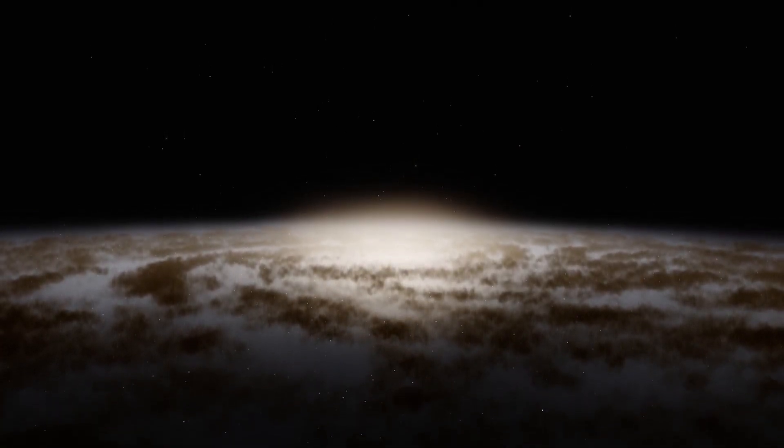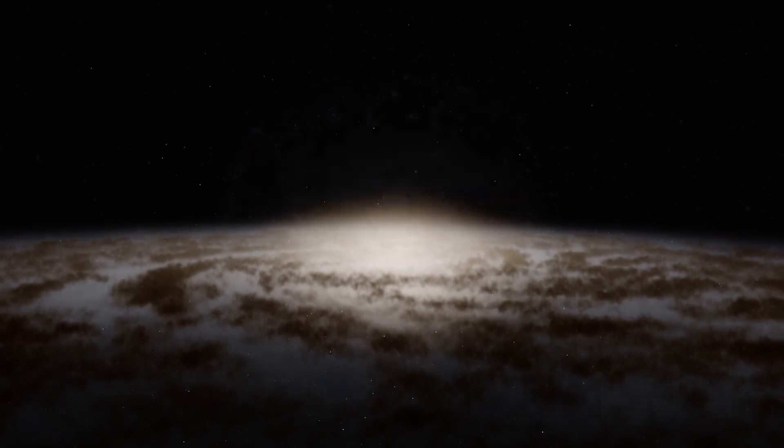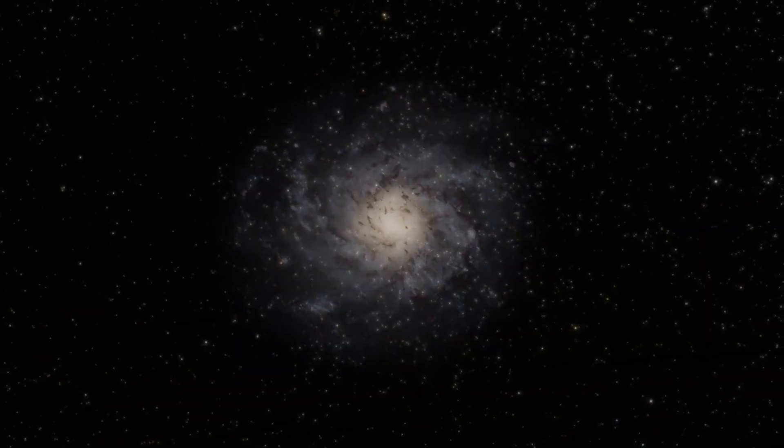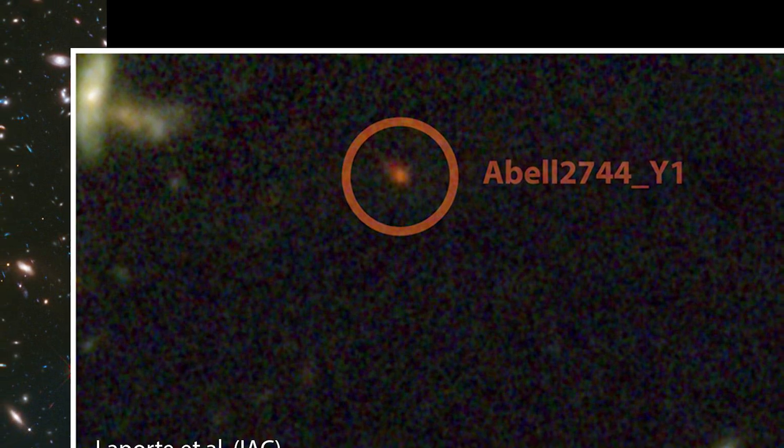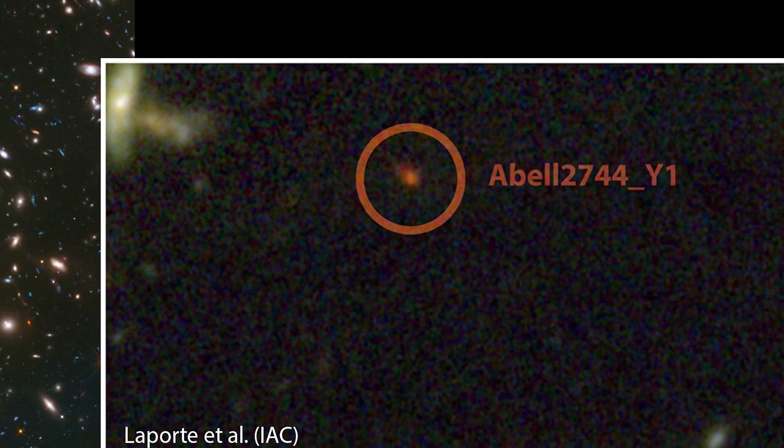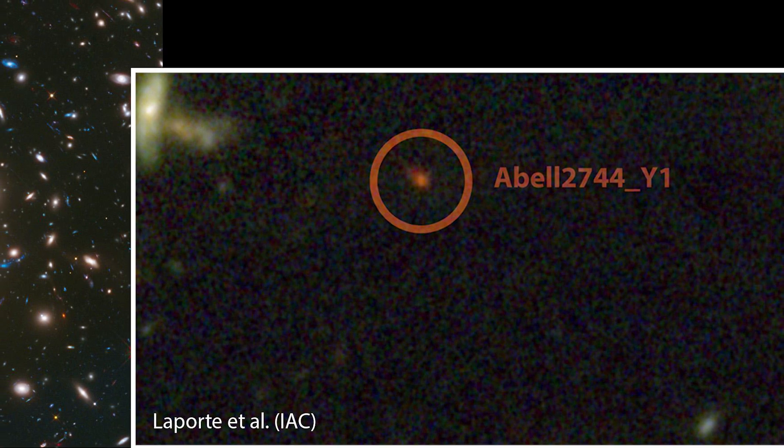In the cosmic far reaches lies another galaxy that has scientists excited, Abel 2744Y1. This extraordinary galaxy stands out for several reasons, but one of the most intriguing is its distance from us. Abel 2744Y1 is so far away that it takes more than 13 billion years for its light to reach us, making it almost as old as the universe itself.